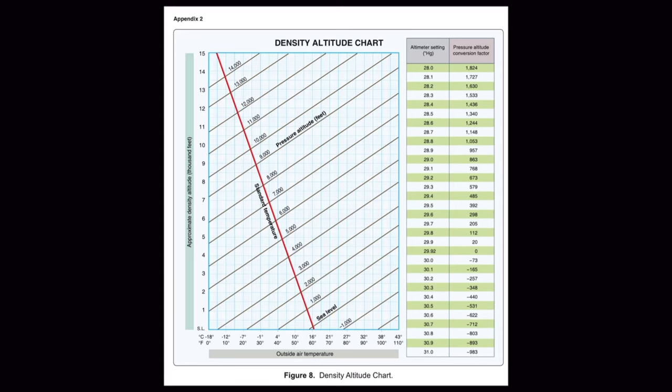Finally, let's use the chart included in the private pilot written test supplement. Start by finding the outside air temperature along the bottom scale, then draw a line straight up from the temperature. Where that temperature crosses the pressure altitude line, draw a horizontal line all the way across and read the density altitude on the scale on the left side of the chart. In our case, it appears to be between 2,500 and 3,000 feet, closer to 3,000. For the practical test, we can round to 3,000 feet. You can see that all three methods give you very similar results.